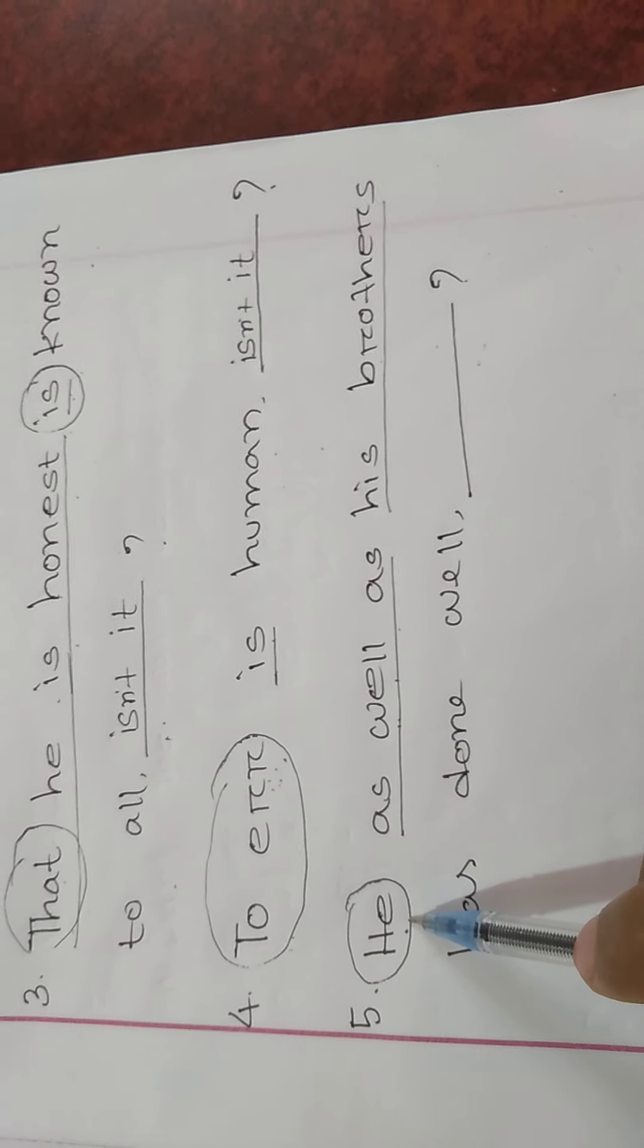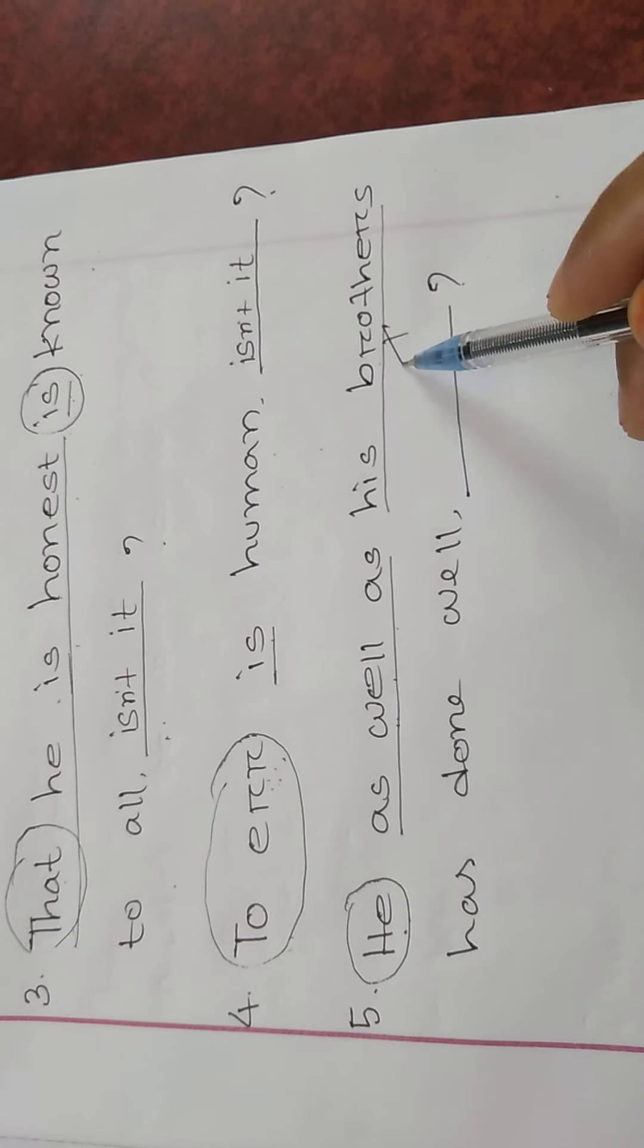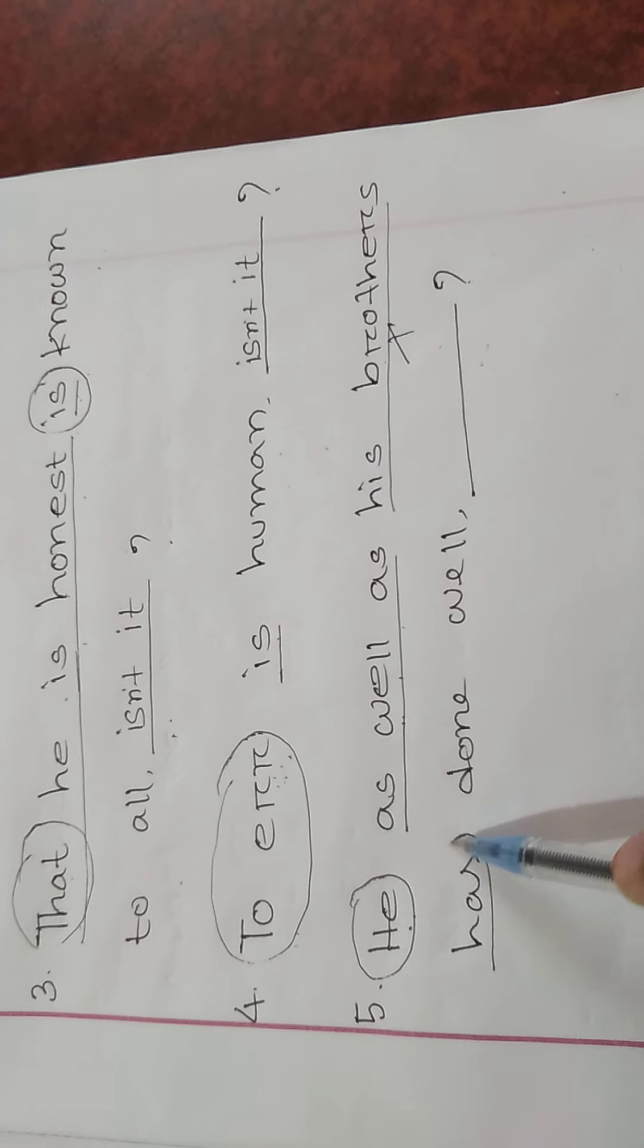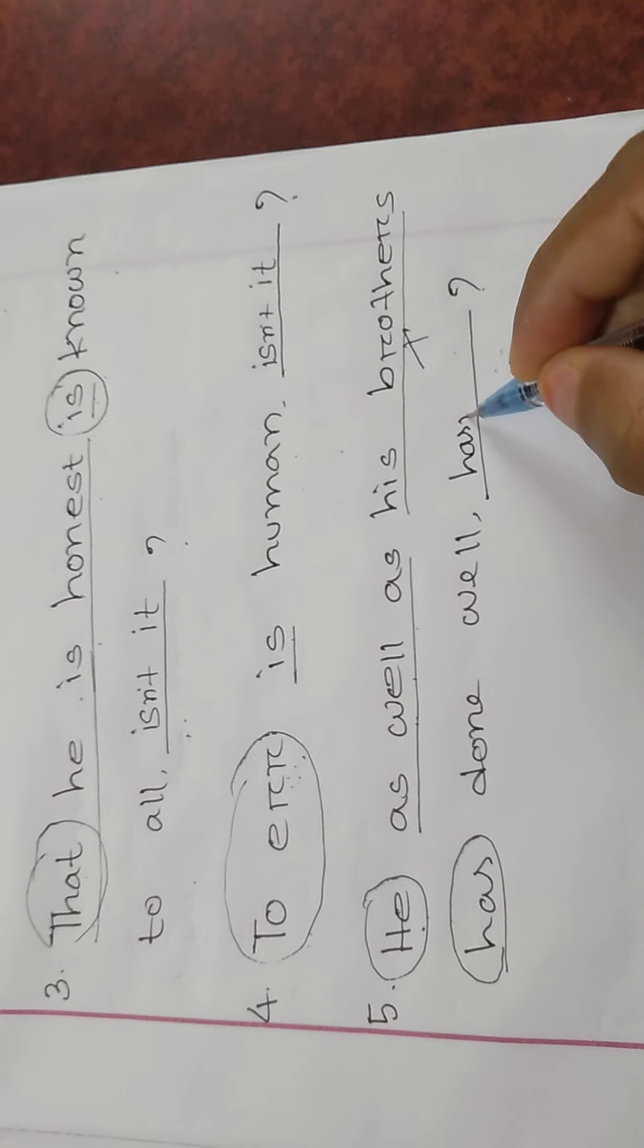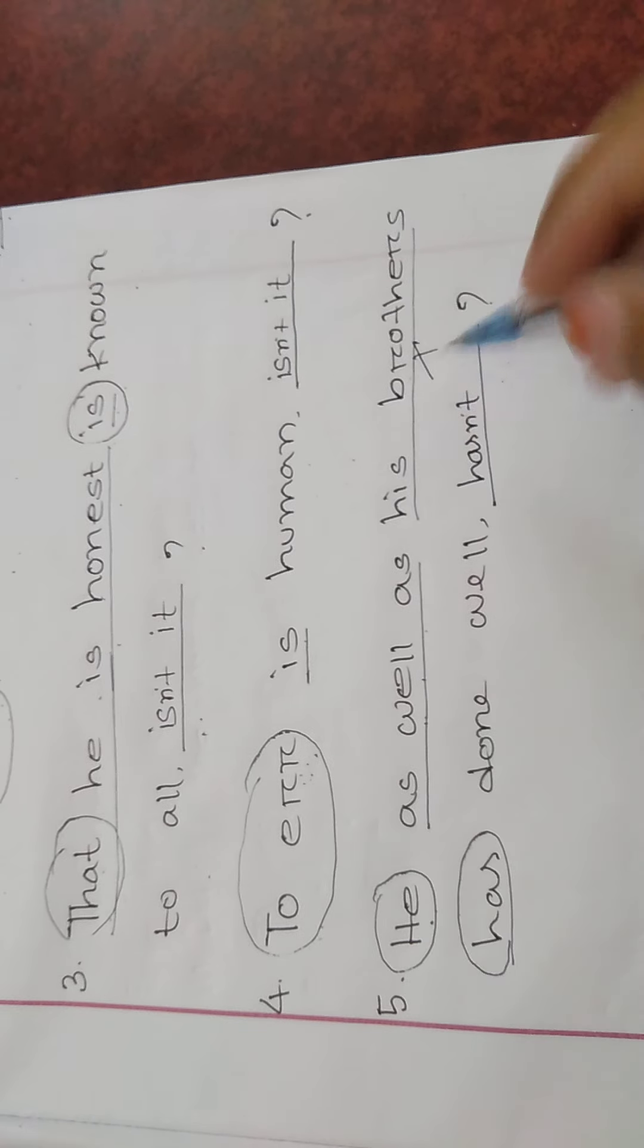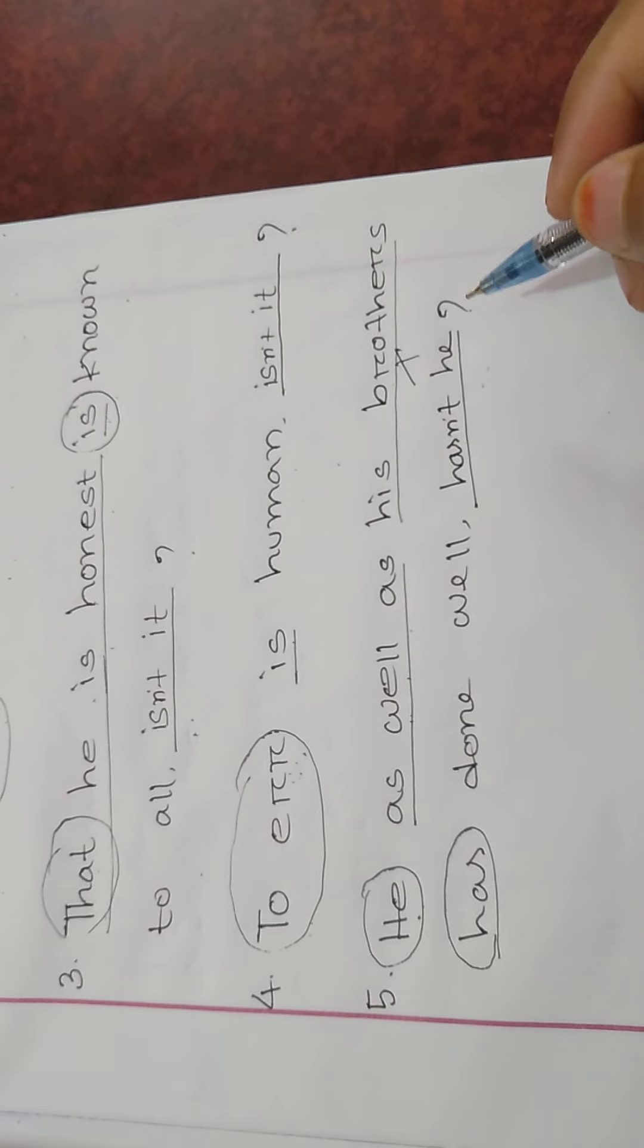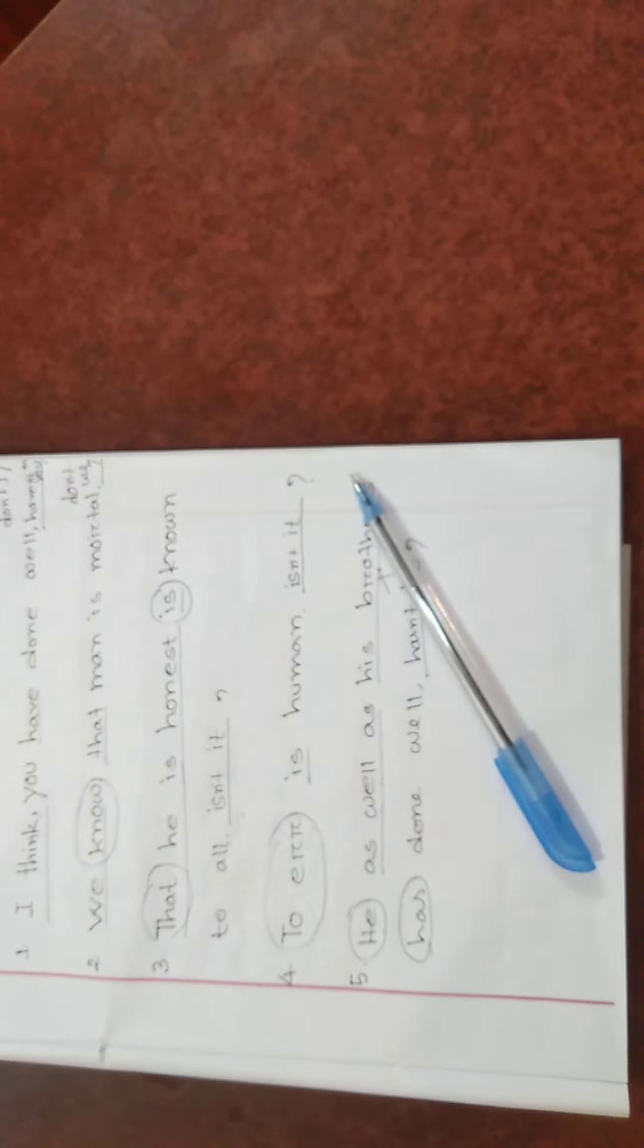When we have infinitive words in the sentence, we need to look at what comes before in the sentence. The previous part determines what tag question we will use.